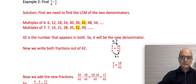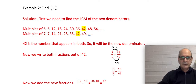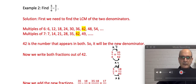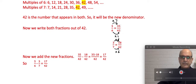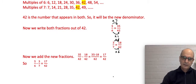For 3/7, the denominator is also going to be 42 since that was our lowest common multiple. I ask: what do I need to multiply 7 by to get 42? That is 6, since 7 times 6 equals 42. I then multiply the numerator by 6 as well: 3 times 6 equals 18. So 3/7 becomes 18/42. Now we have both fractions with the same denominator.